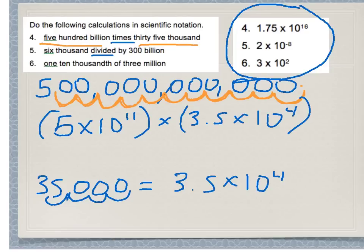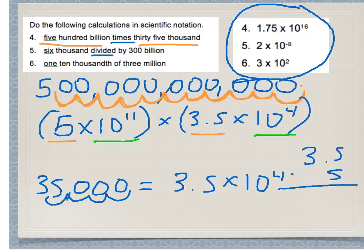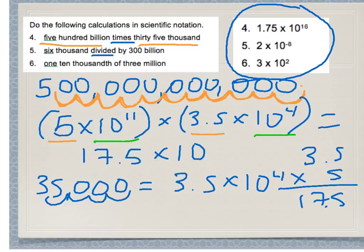How do we do this in scientific notation? You should keep it in scientific notation and think of the parts separately — the front numbers together and the base tens together. Take the front numbers first: 5 times 3.5 gives you 17.5. The answer is going to be 17.5 times 10 to the somethingth. For the exponents, when multiplying you just add them: 11 plus 4 equals 15. So my answer is 17.5 times 10 to the 15th, circled in yellow.